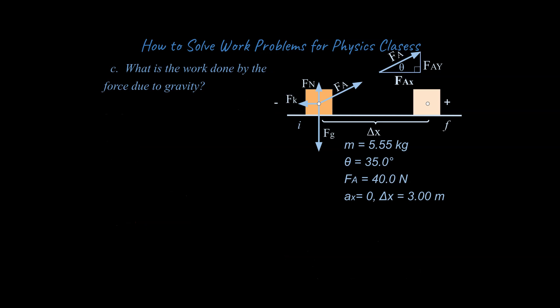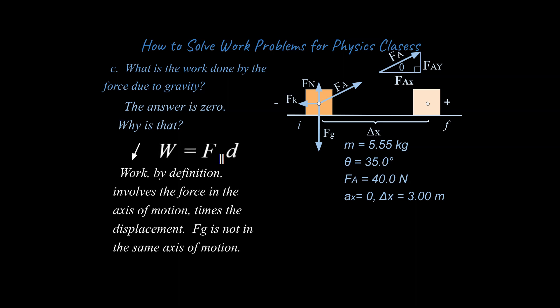What is the work done by the force due to gravity? The answer is zero — there is no work done by gravity. Why? Because gravity is not in the same plane as the motion. No component of the gravitational force is in the x-axis; it's completely in the y-axis. Similarly, the work done by the normal force is also zero, for the same reasoning.